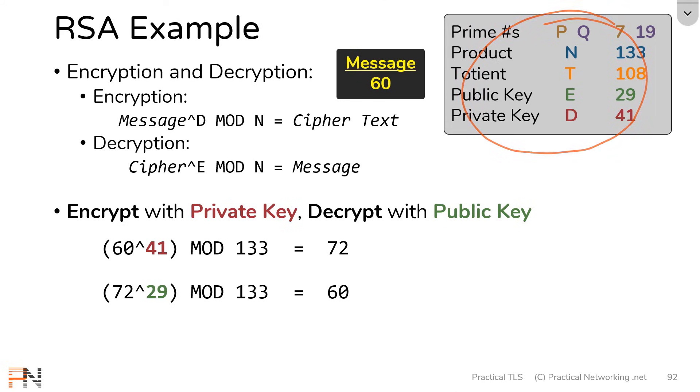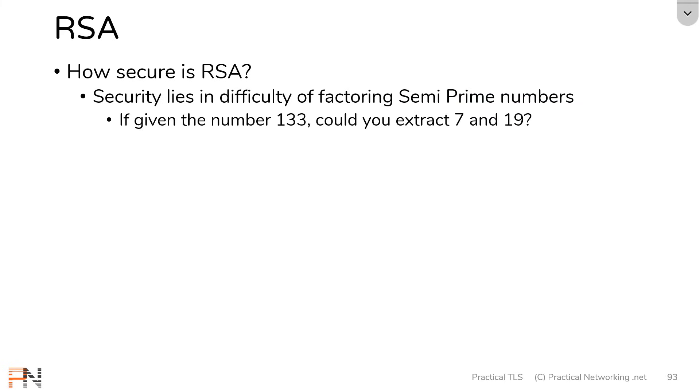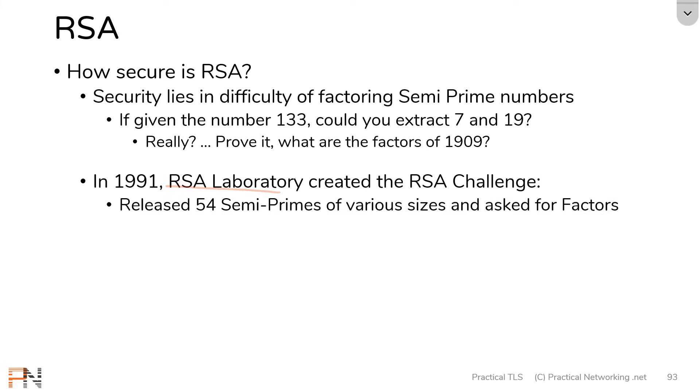Now, of course, you and I use very small numbers for this example. In reality, RSA uses much bigger numbers. But how secure is RSA? Well, the security of RSA lies in the difficulty of factoring semi-prime numbers. Remember, our semi-prime number was 133. And if I gave you the semi-prime number of 133, could you extract the factors of 7 and 19? Some of you might think you can. Well, prove it. Let me give you a bigger semi-prime number. 1909 is a semi-prime number. Feel free to pause the video and tell me the prime factors. While you're doing that, I'm going to continue on. Let me tell you a story about the security of RSA. In 1991, RSA Labs created the RSA Challenge. They released 54 different semi-prime numbers of various sizes and offered cash prizes for anybody that could derive the prime factors.